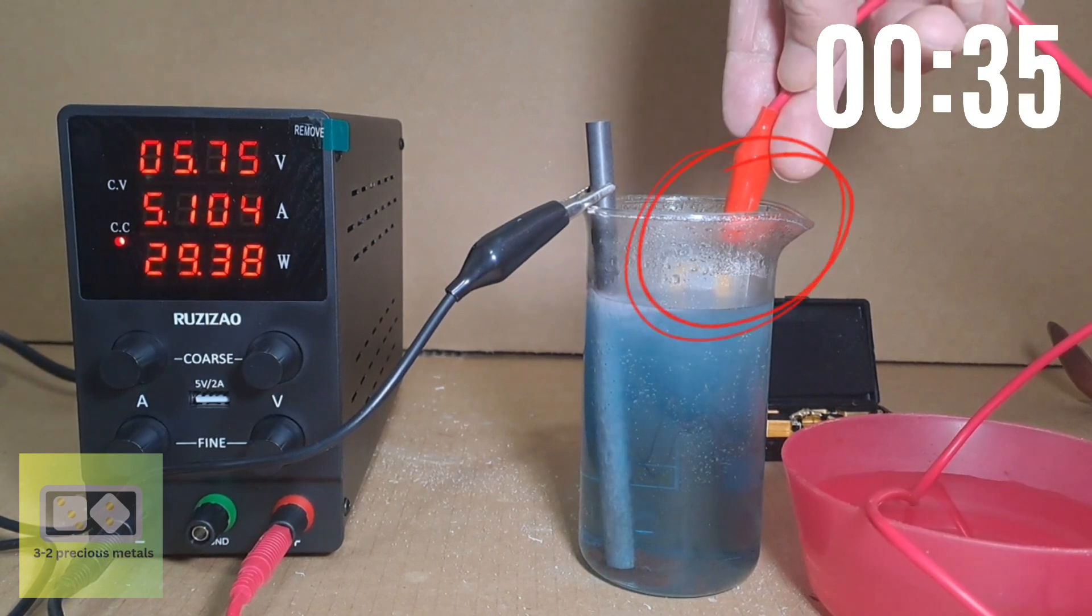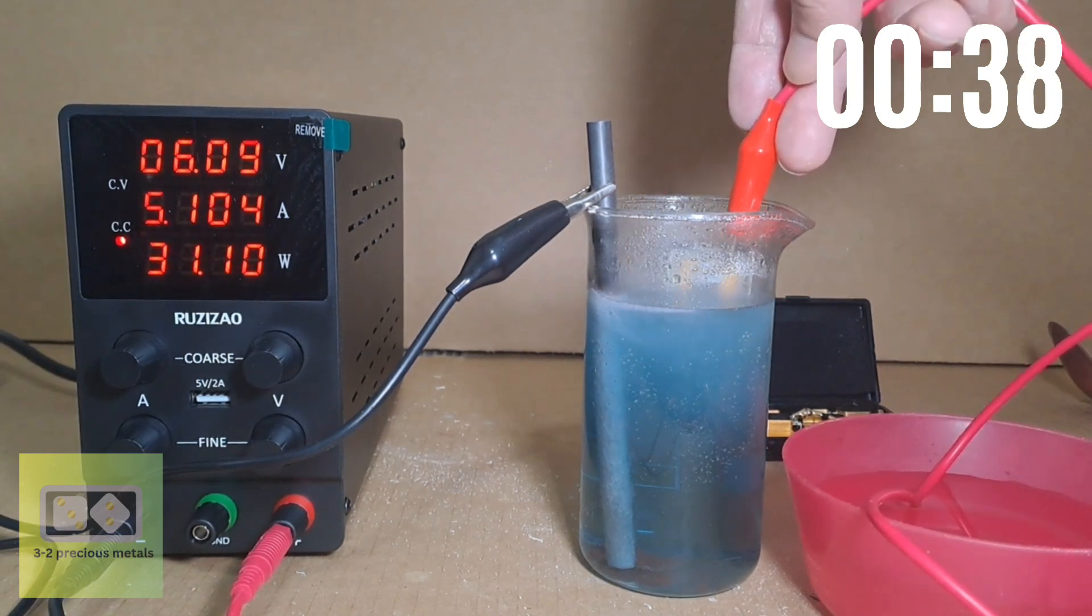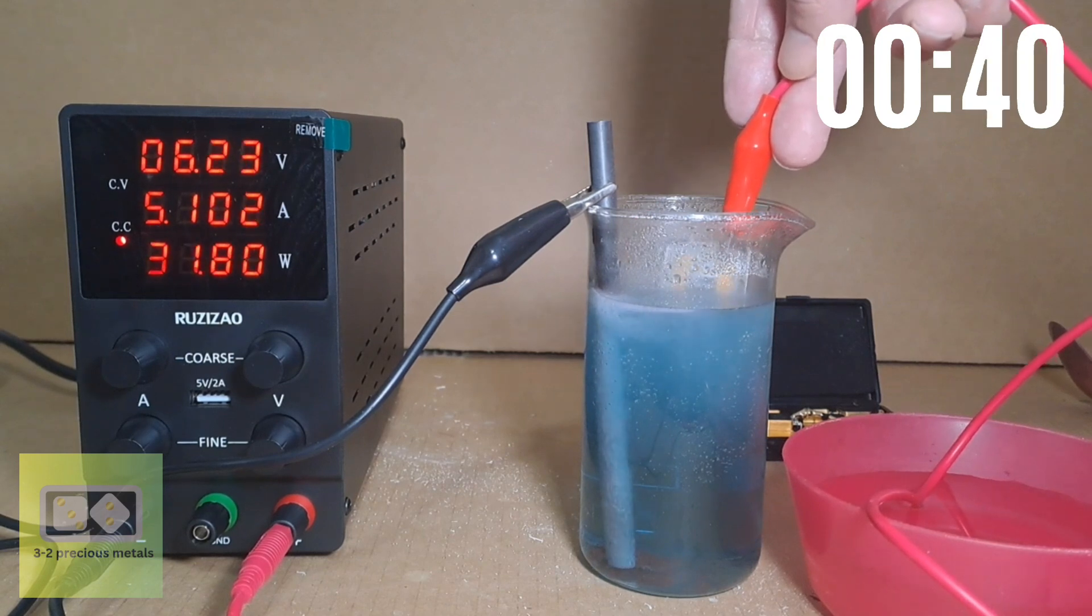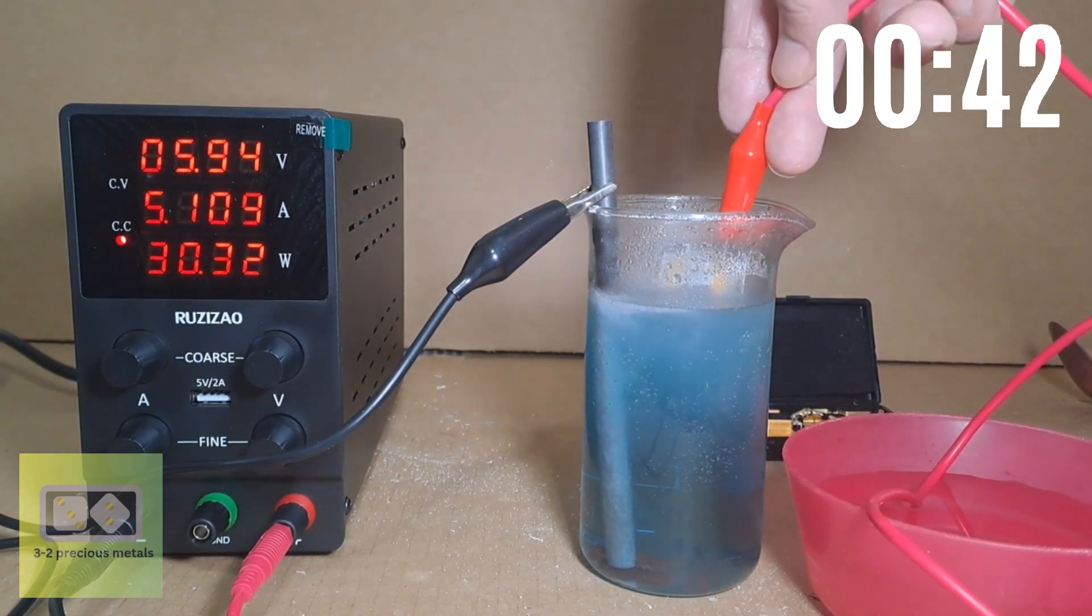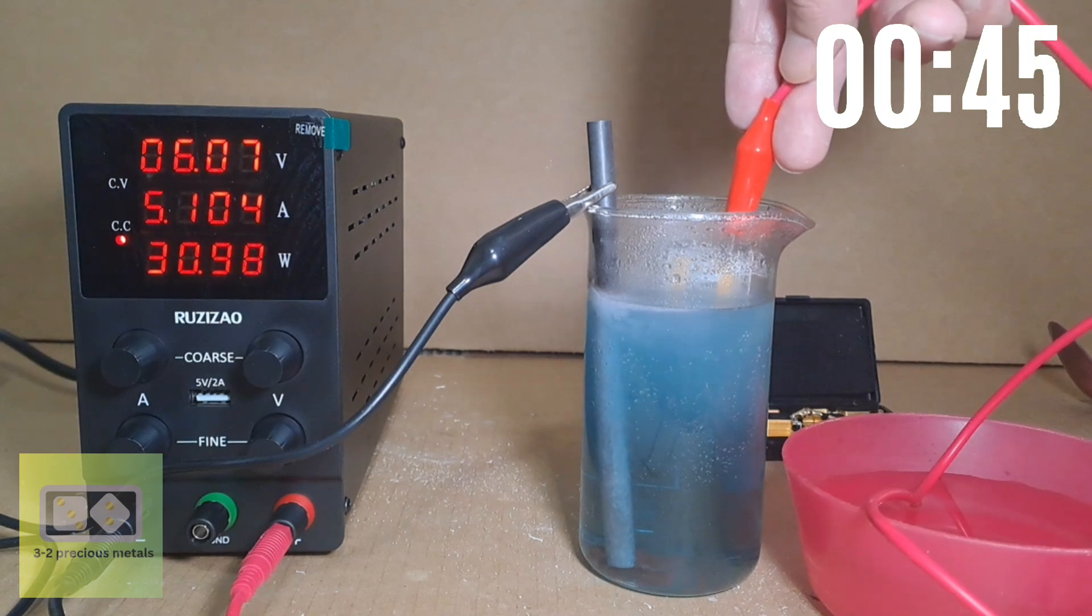The positive wire is attached to the anode. The anode is the piece that we are trying to remove the gold from. In this case it is a heat sink from an old computer processor.